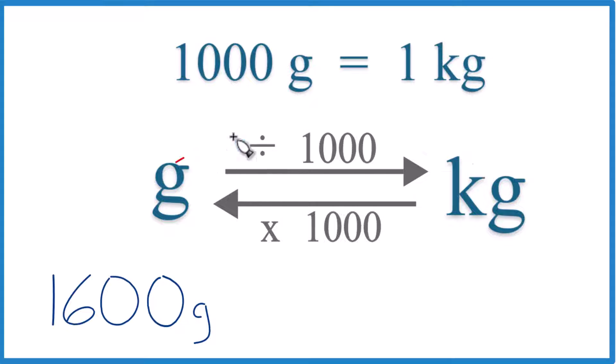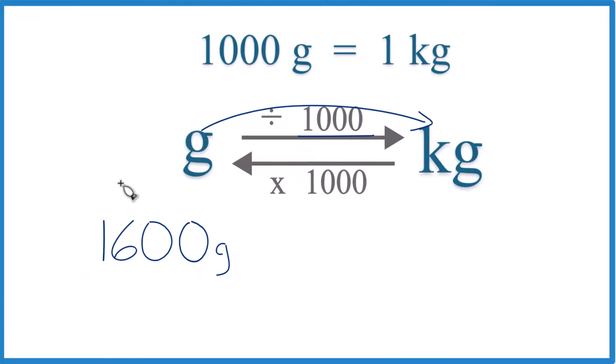So here, we're going from grams to kilograms, so we're going to divide by 1,000, like this. And it's 1,000 grams per kilogram, just like in our conversion factor. This way, grams cancel out. We're left with kilograms. We know we set it up correctly.